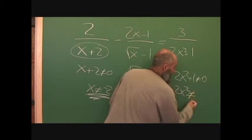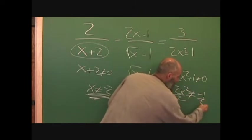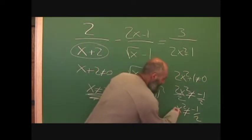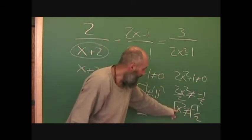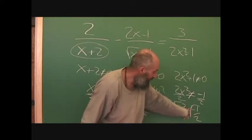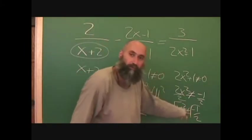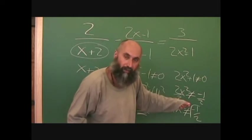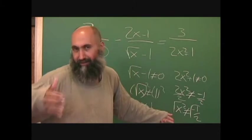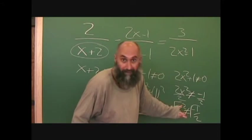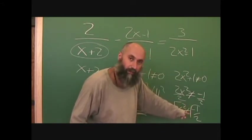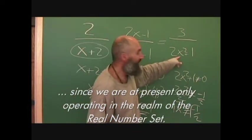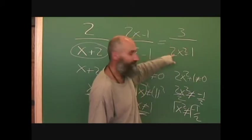For the third denominator, 2x squared plus 1, you move the 1 over: 2x squared can't equal negative 1, divide by 2, so x squared can't equal negative one half. Taking the square root of both sides gives x can't equal the square root of negative one half. Now, in the real number set, you can't take the square root of a negative number, so there are actually no restrictions here — there's nothing we could put in to make this denominator equal zero.